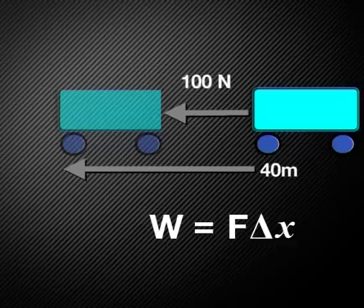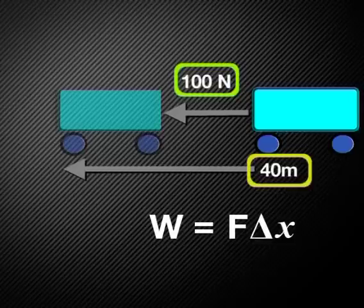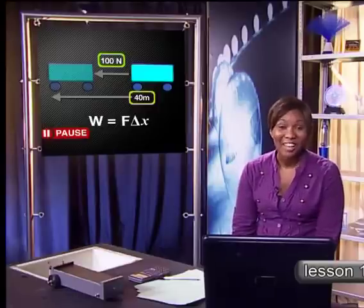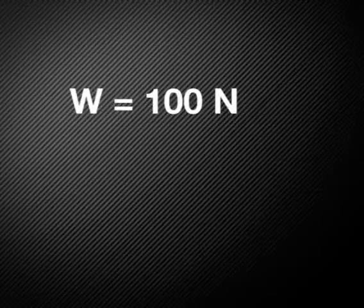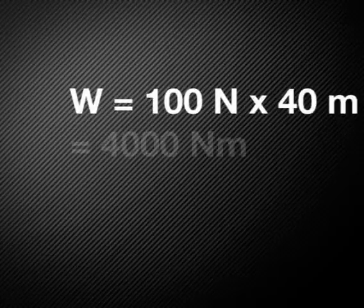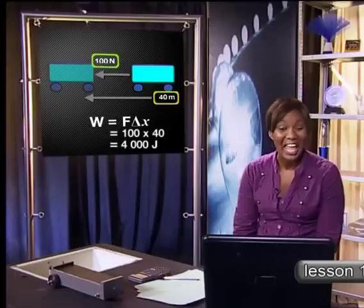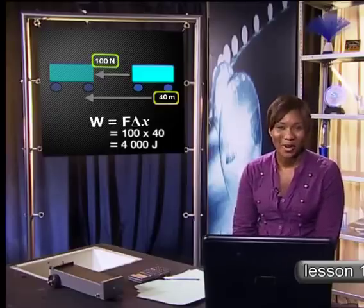Let's do another calculation. Say the force exerted on the trolley was 100 Newtons and it moved a distance of 40 metres. Can you calculate the work done? The force exerted was 100 Newtons and the trolley moved 40 metres, so the answer is 4,000 joules. Excellent work — I hope you got the same answer.